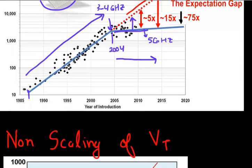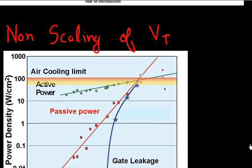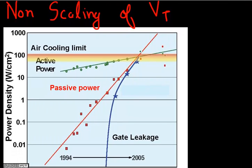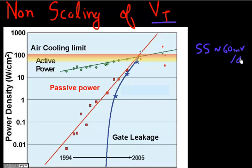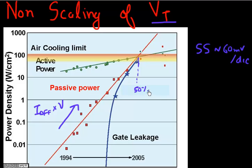Mr. Dennard pointed out in his article that not only is scaling of VG or VD important, but equally important is scaling of VT. People did try to scale VT, but what happened was since your subthreshold slope is fixed to a minimum of 60 millivolts per decade, if you scale down VT as Mr. Dennard predicted, your passive power — which comes from I-off times voltage — just kept climbing up. By around 2005, it almost became equivalent to 50% of active power.